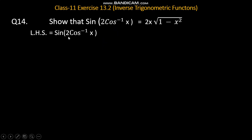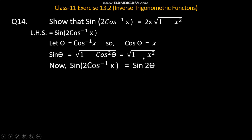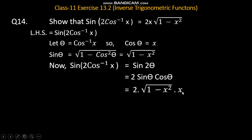Left hand side: sin(2 cos inverse x). Let cos inverse x equal to theta, so cos theta is equal to x. Left hand side में value put करें: sin(2 cos inverse x) is equal to sin 2 theta. sin 2 theta का formula होता है 2 sin theta cos theta. sin theta is equal to square root of 1 minus cos square theta, यानि square root of 1 minus x square. दोनों की values put करें: 2 into sin theta (1 minus x square का square root) into cos theta (x). तो two x into square root of 1 minus x square, which is equal to right hand side.